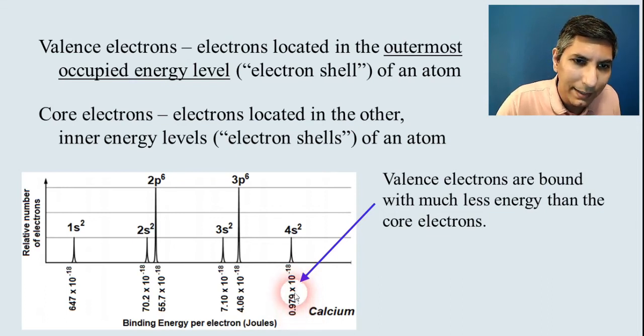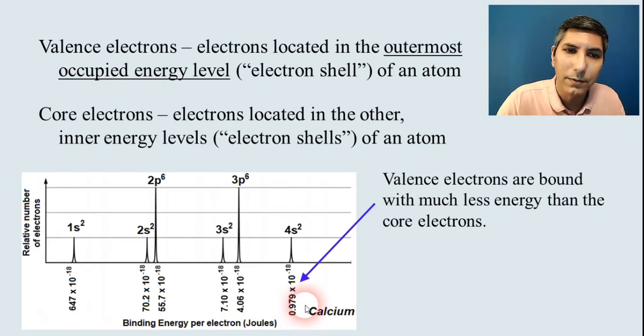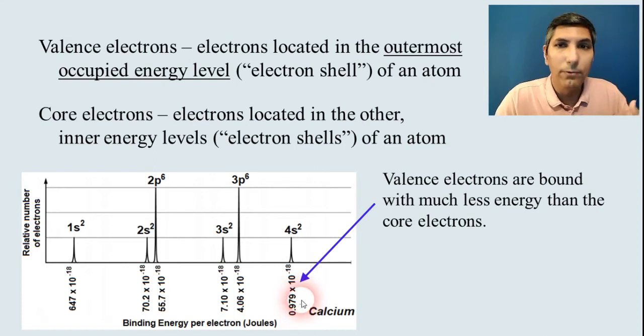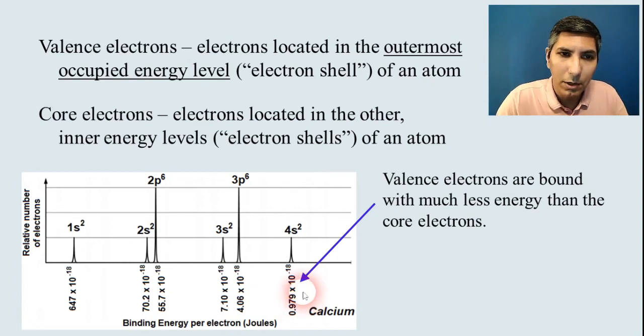And notice how small that number is compared to the others. 0.979. I'm going to leave off the exponent there. We'll just say 0.979. And compare that to the others. That's about one-fourth of the energy that's required to take away these three P electrons. It's about four times larger over here. In some cases,